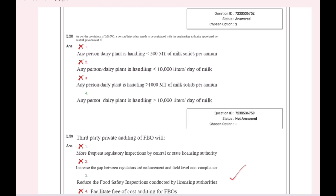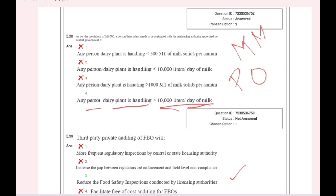As per provisions of MMPO, a person's dairy plant needs to be registered with the registering authority appointed by the central government if the dairy plant is handling greater than 10,000 liters per day of milk.